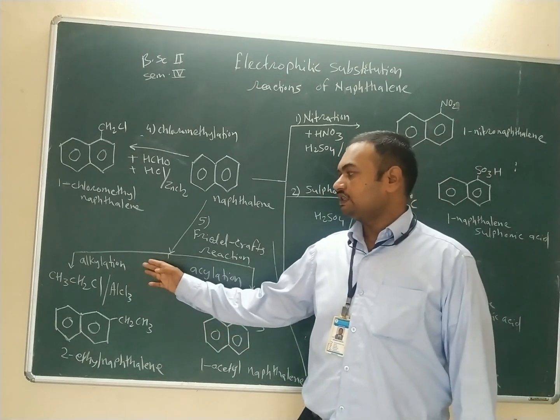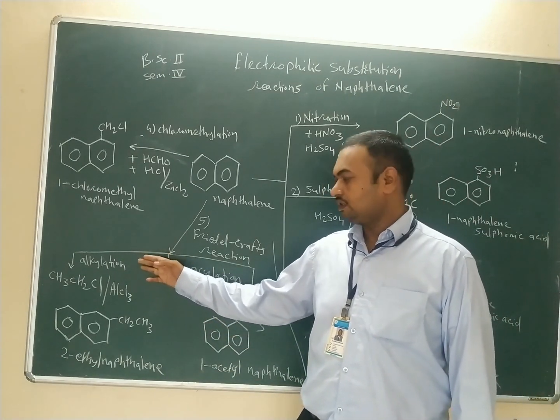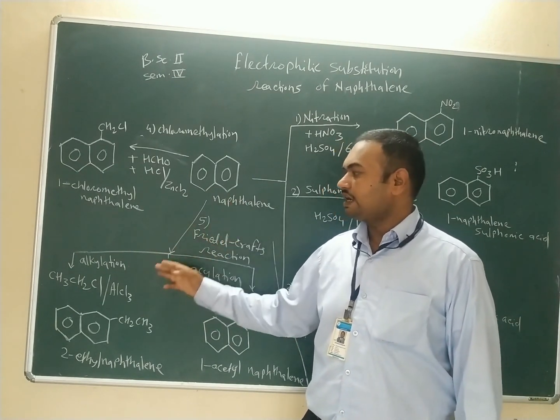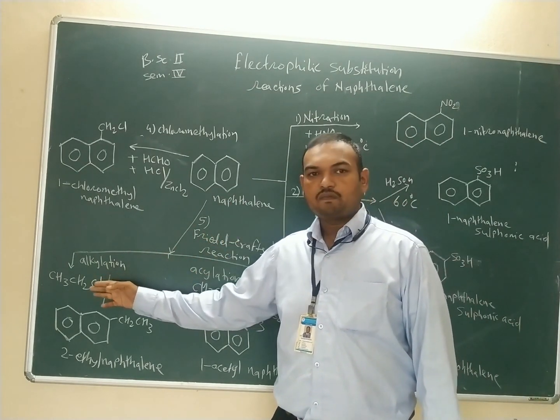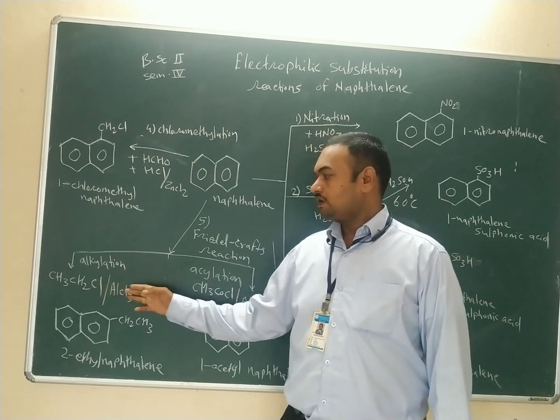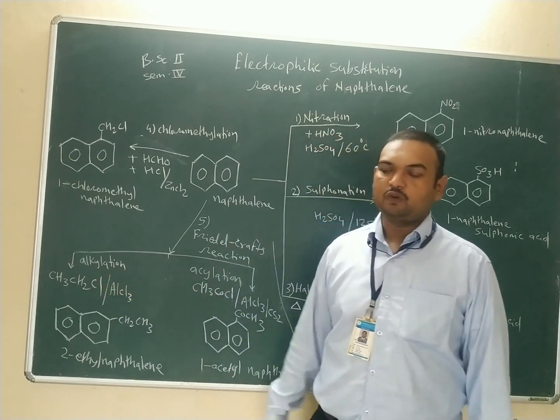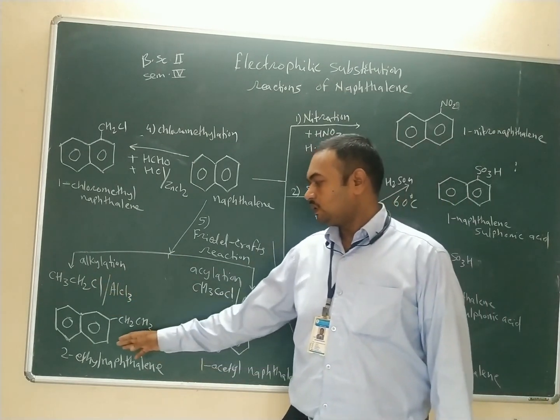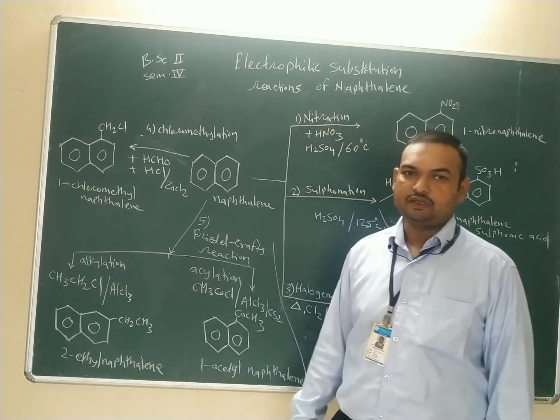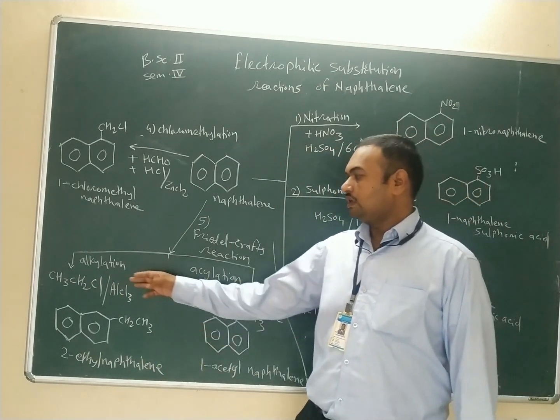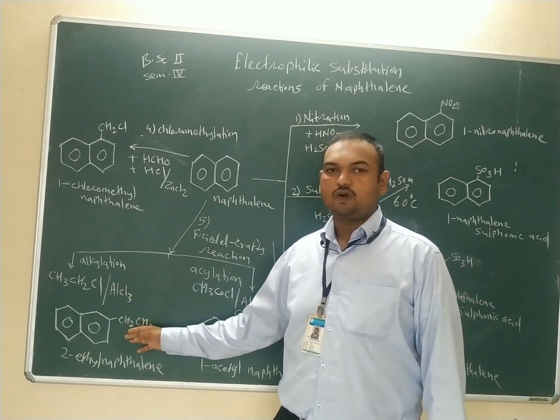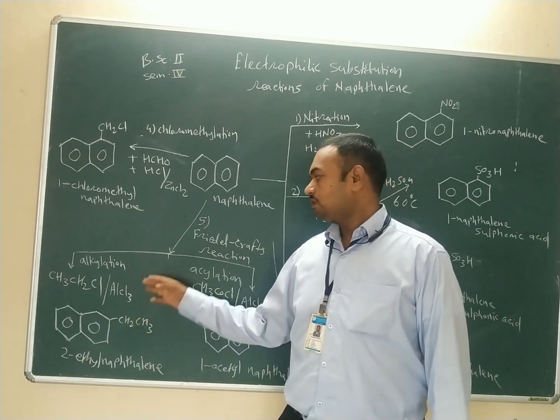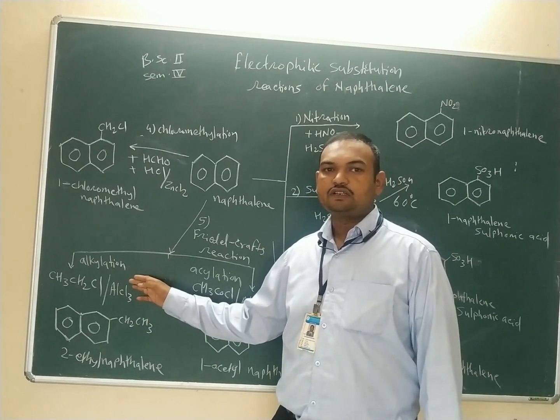In Friedel-Crafts alkylation, naphthalene reacts with ethyl chloride in the presence of aluminum chloride to form 2-ethylnaphthalene. Thus, alkyl-substituted naphthalene is obtained from the Friedel-Crafts alkylation reaction.